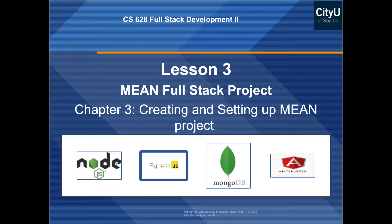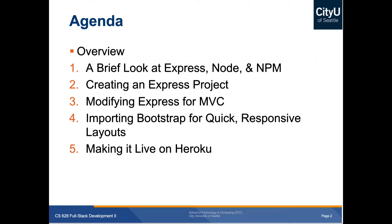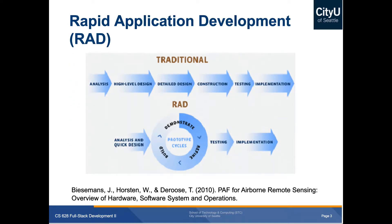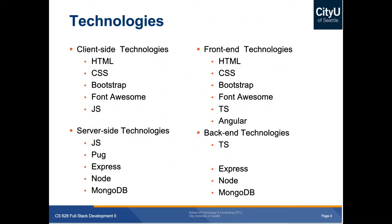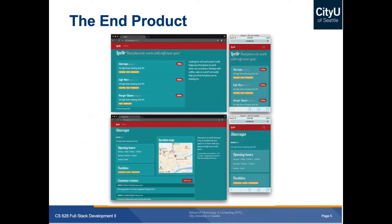Welcome to lesson three. We'll talk about creating and setting up a MEAN project, doing some MVC, and deploying to Heroku. We talked about traditional and rapid application development, where instead of a big bang approach where you show everything at the end, we do simple, small iterations — features and bug fixes — and get feedback right away, meaning you test, implement, and get feedback, then go back to that cycle.